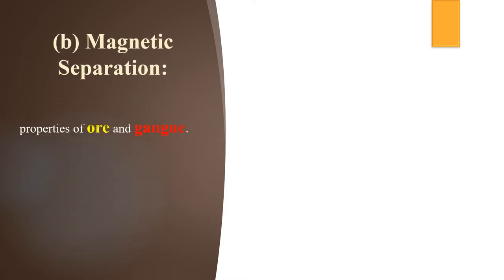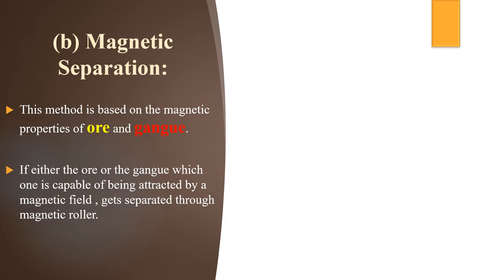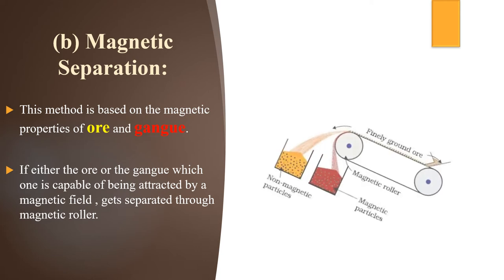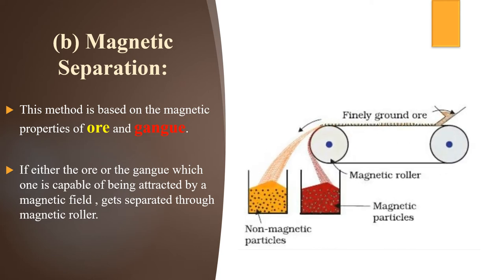Magnetic separation is based on the magnetic properties of ore and gangue particles. If either the ore or the gangue is capable of being attracted by a magnetic field, it gets separated through the magnetic roller. The powdered ore is fed onto a magnetic roller; the magnetically attracted particles collect in one container while the non-magnetic particles collect in another.